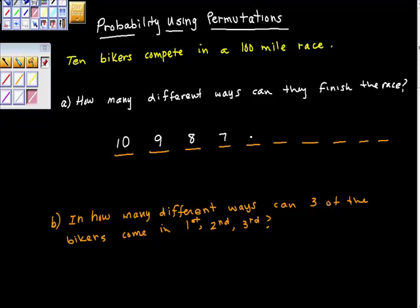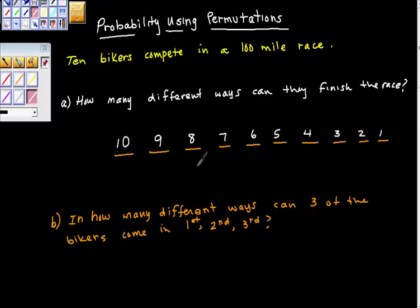...six, five, four, three, two. Of course, when all the other riders have finished, the last guy — there's only one way. The last guy is going to finish last. So what does that turn into?